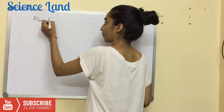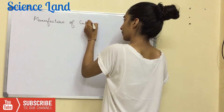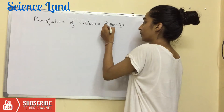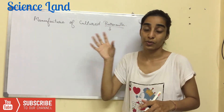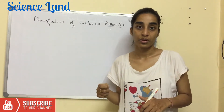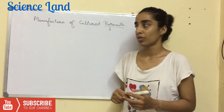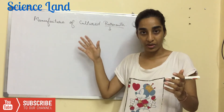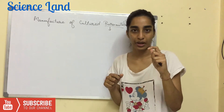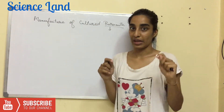Hello friends, welcome back to Science Land. Today I'm going to talk about the manufacture of cultured buttermilk. Buttermilk is a phospholipid-rich fluid which is obtained during churning of cream in butter manufacture — that is normal buttermilk. But here we are culturing the buttermilk; cultured buttermilk has a specific aroma and flavor to it.